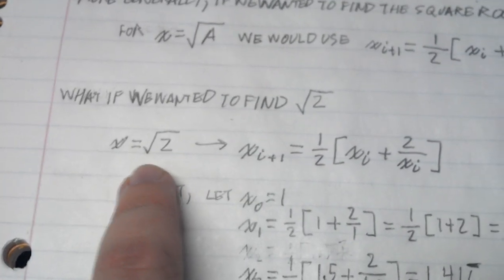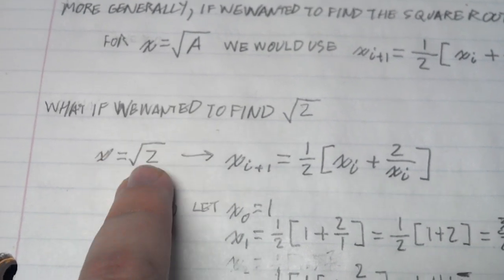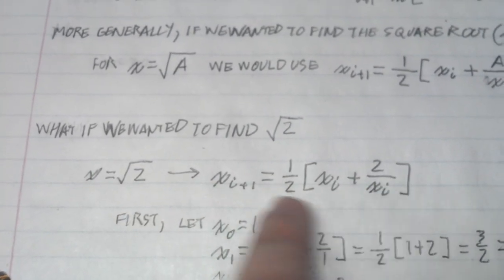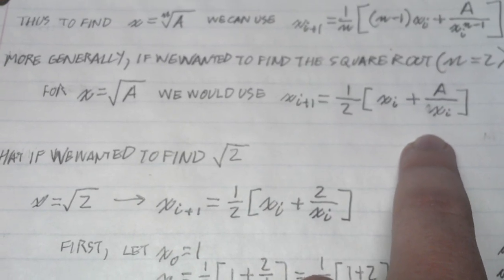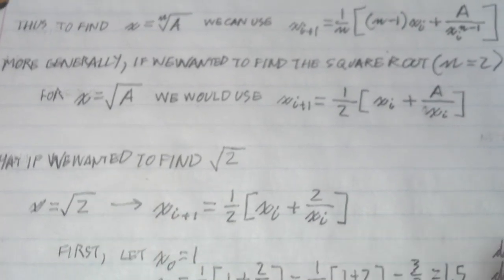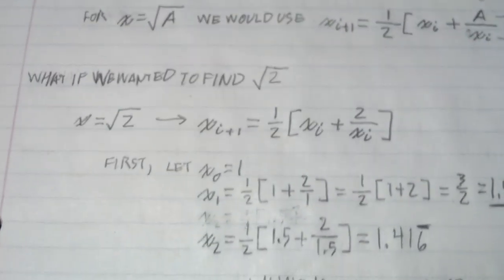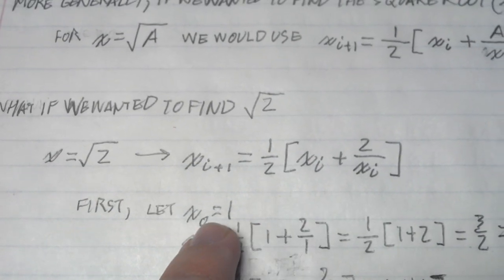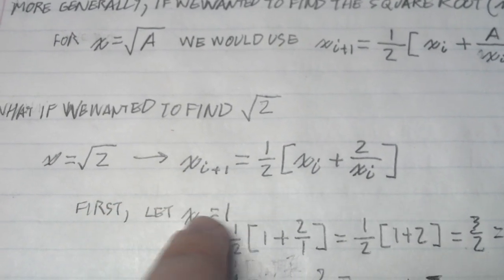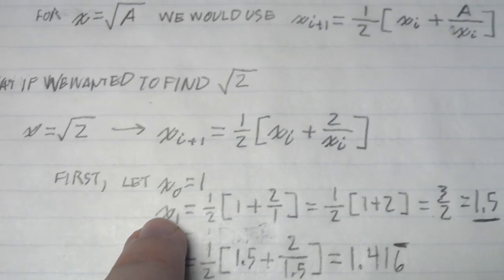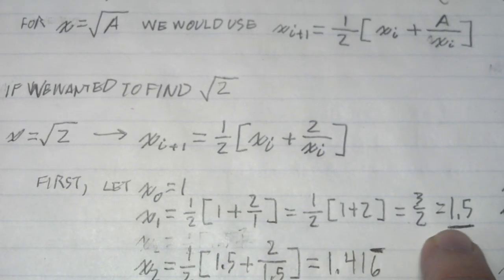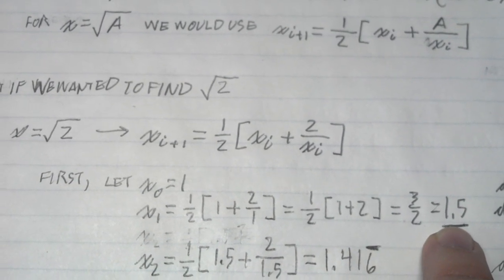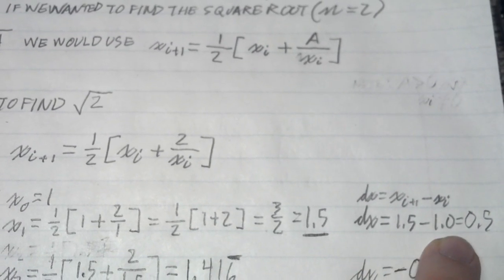We would plug in 2 as our a value and use the general equation to get our answer. As our first guess, let x₀ = 1. To find x₁, we apply our numbers and end up with the next answer. The difference of these two numbers is 0.5.